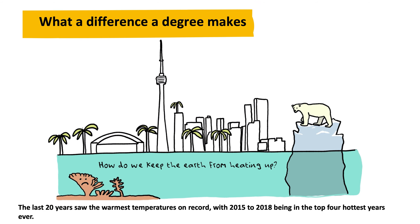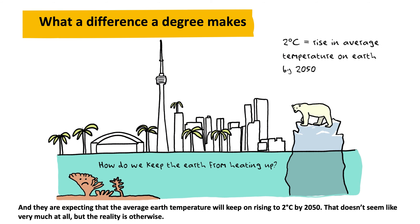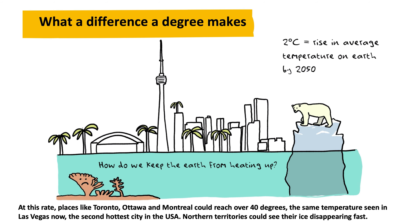The last 20 years saw the warmest temperatures on record, with 2015 to 2018 being in the top 4 hottest years ever. They are expecting that the average Earth temperature will keep on rising to 2 degrees Celsius by 2050. That doesn't seem like very much, but the reality is otherwise. At this rate, places like Toronto, Ottawa, and Montreal could reach over 40 degrees — the same temperature seen in Las Vegas now, the second hottest city in the USA.